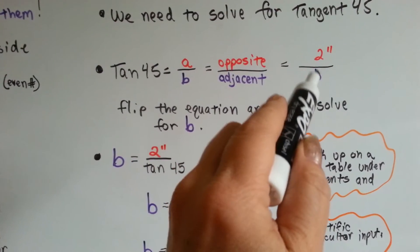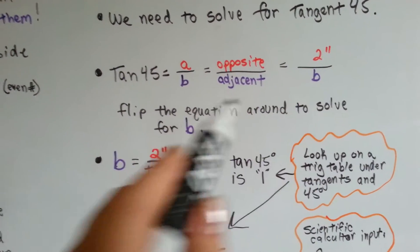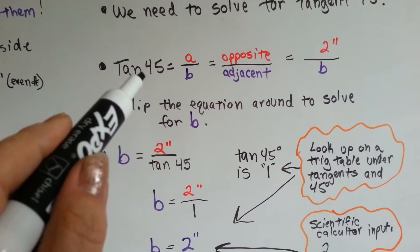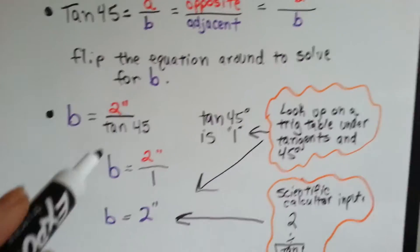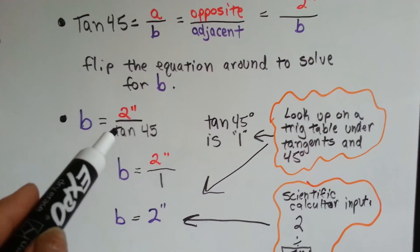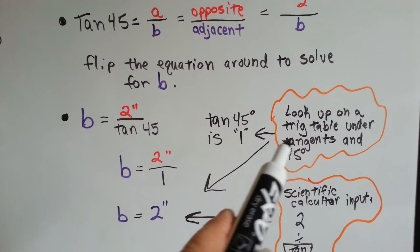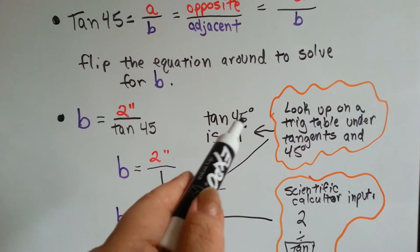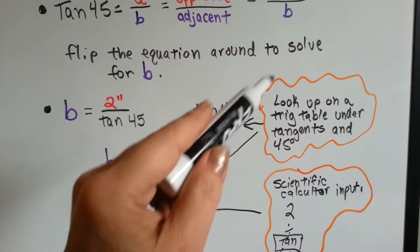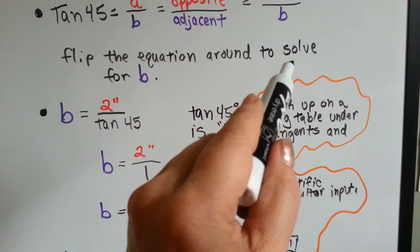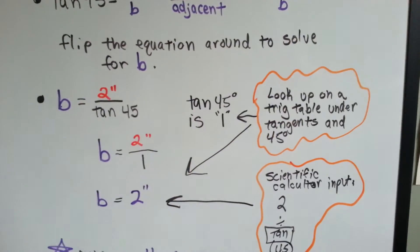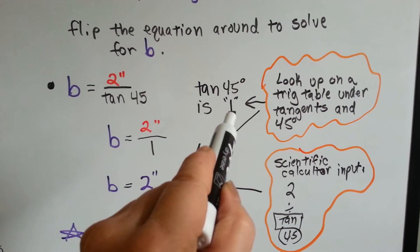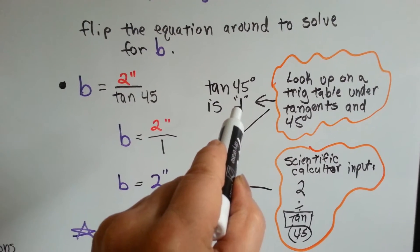We flipped the equation around to solve for B, because we now have 2 inches over B, but we want to solve for B. So, what we do is we put B equals 2 inches over tangent 45. We flipped it. Now, if you don't have a scientific calculator, it's no big deal. You can look it up online or in the back of your math book. You'll see trig tables. Just type in trig table, and you'll see a bunch of degree measures going down the first column, and then you'll see sine, cosine, or S-I-N, C-O-S, or T-A-N in the columns coming down, and that's the trig table you want. Look for 45 degrees. Go all the way across to the tangent column, and you'll see that it's got 1.0 for tangent 45.